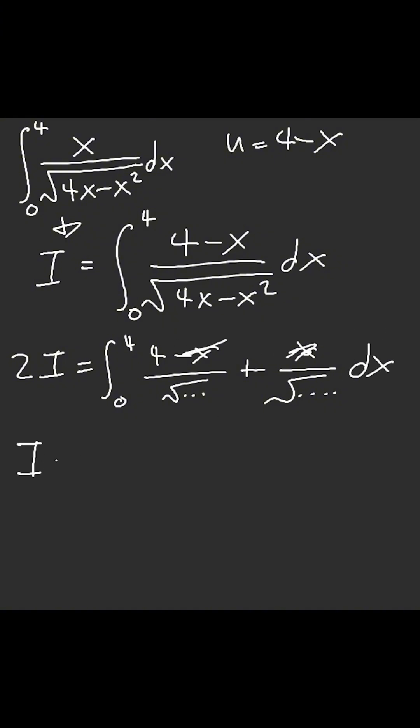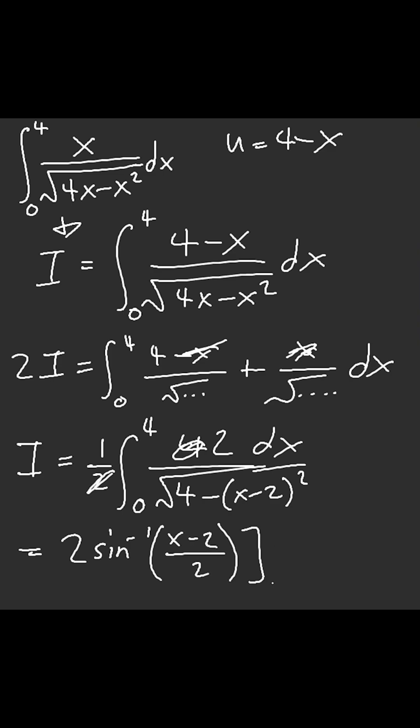So our answer is literally just 4 over... well, this is just... we need minus 4 plus 4. This cancels out to be 2. It's awesome. The 2 cancels... oh, I'm sorry. We get 2 inverse sine of (x minus 2) over 2, evaluated from 0 to 4.